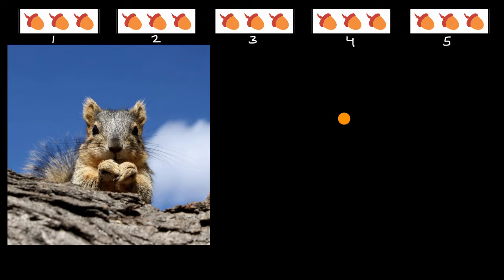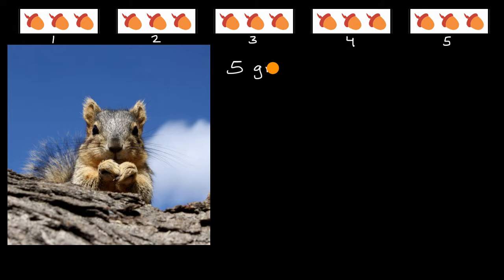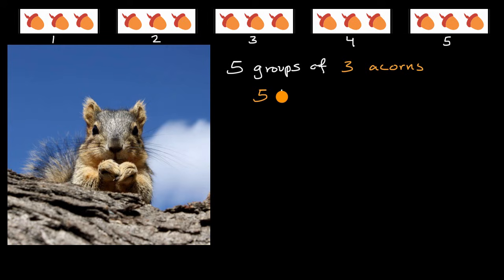If you were curious how many total acorns he's collected, well, you could just count them up, or you could think about it this way: he's got five groups of three acorns — five equal groups of three acorns. So you could say five groups of three acorns, and the total amount would be five threes.